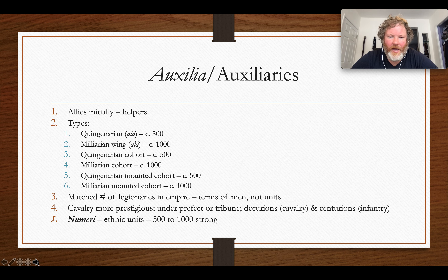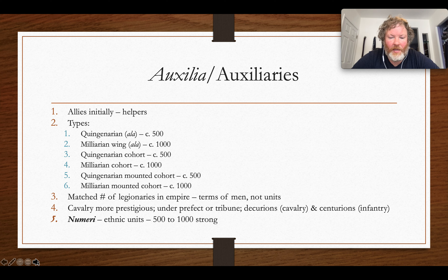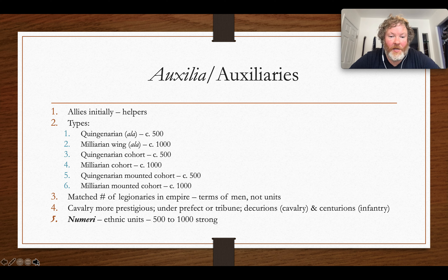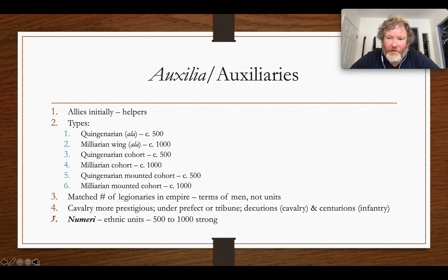There are smaller subdivisions after that, but we won't get into them. During the imperial era, there are approximately the same number of auxiliary soldiers in the Roman Empire as there were legionary soldiers. But there were far more auxiliary units than there were legions, because if you have about 5,000 men in a legion, you need several more 500-to-1,000-strong auxiliary units to reach that number. The quingenarian ones — the 500-strong units — were much, much more numerous than those with 1,000 soldiers.